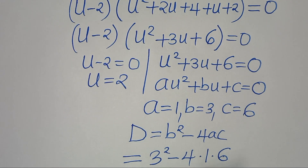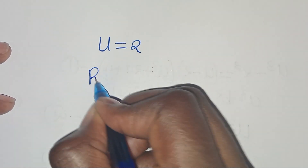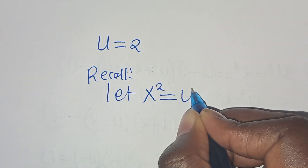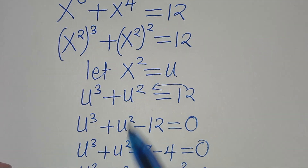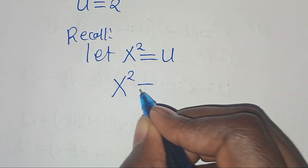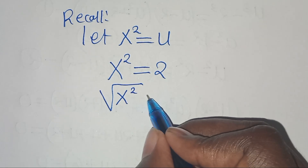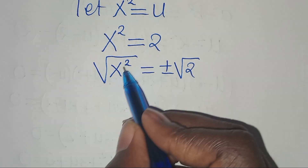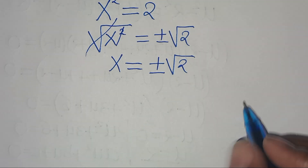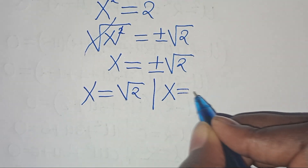Since x is a real number, we proceed with u = 2. Recalling that u = x², we substitute to get x² = 2. Taking the square root of both sides gives x = ±√2. So we have two values: x = √2 and x = -√2.